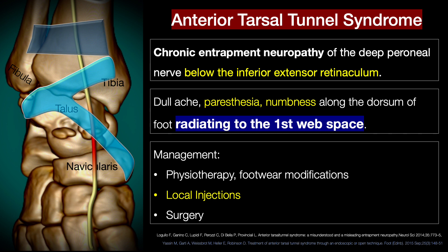The inferior extensor retinaculum is a Y-shaped fibrous structure that forms the roof of the tarsal tunnel. The floor of the tarsal tunnel is formed by the talus and the navicular bones. You might also have varices due to venous plexus surrounding the dorsalis pedis artery compressing the deep peroneal nerve. Most patients present with sensory symptoms consisting of dull ache, paresthesias, and numbness along the dorsum of foot, radiating to the first web space. Motor symptoms are relatively mild because many other muscles perform similar functions. Management typically consists of physiotherapy, footwear modifications, local injections, and surgery as a last resort. Our case was different from classic anterior tarsal tunnel syndrome in that the level of nerve entrapment was much more inferior, at the level of the tarsometatarsal joints.